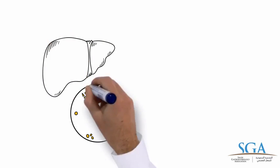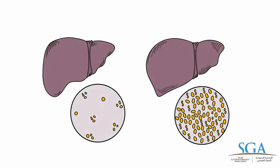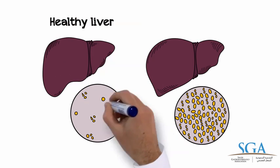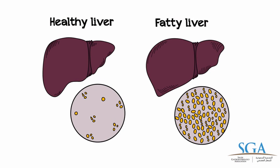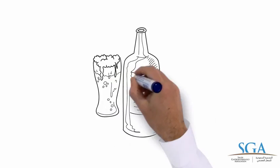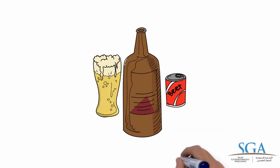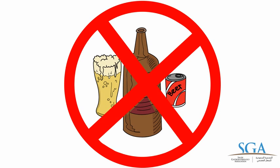In fatty liver, the liver functions normally and looks normal under the microscope, except for accumulations of fat within cells. People who drink too much alcohol can get a condition similar to NASH, but NASH happens in people who do not drink alcohol or drink only a little alcohol.